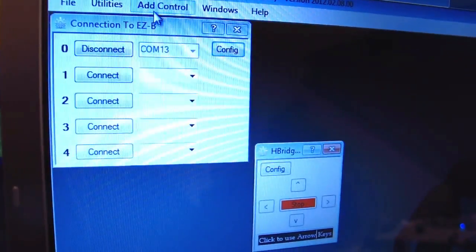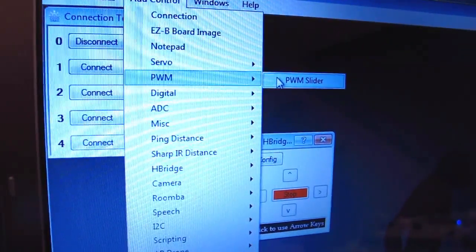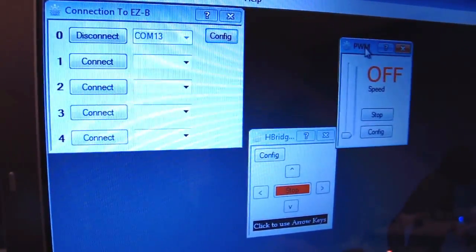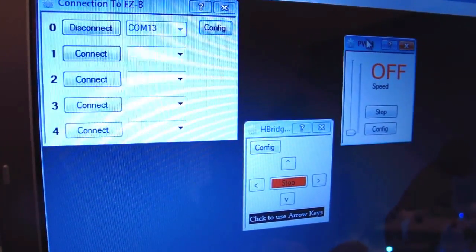Now, when I add the control for the PWM, what we can do now is we can pulse the input signals on the H-bridge itself. So we're actually going to be able to control the speed now.